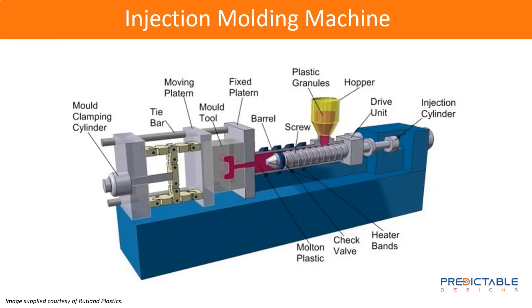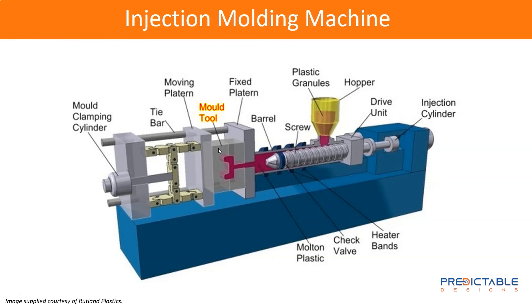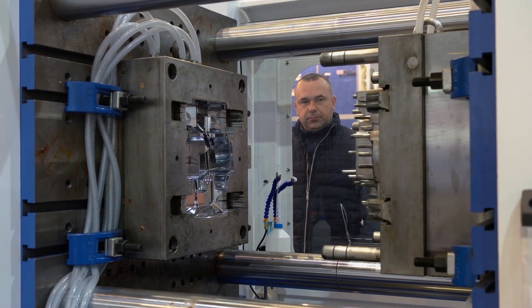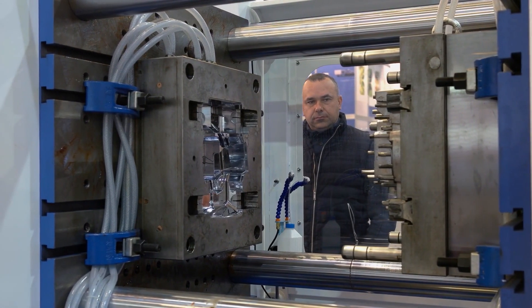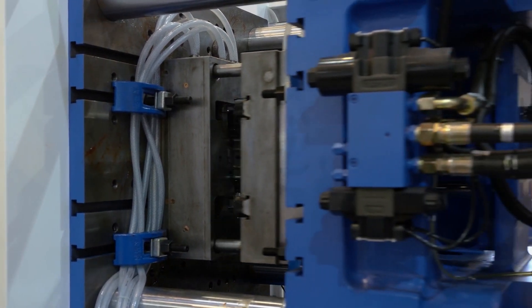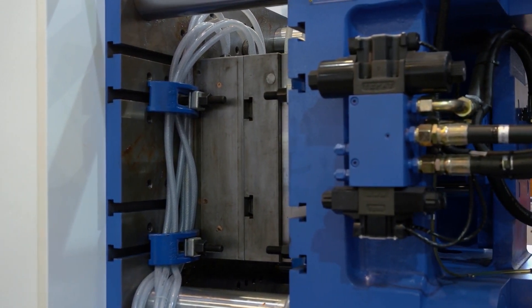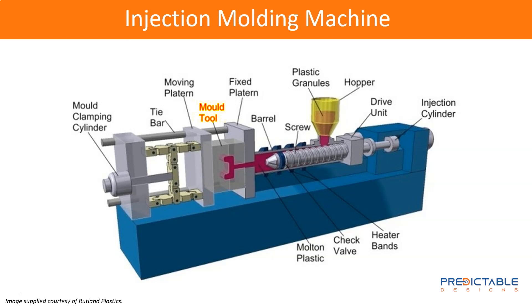This is a graphic illustration of an injection molding machine. Injection molding starts with a mold, which is two metal pieces that come together. Inside these two metal mold pieces, it forms a cavity, and molten plastic is injected into that cavity. It solidifies, the mold is opened, and out comes a part in the shape of the cavity in that mold.